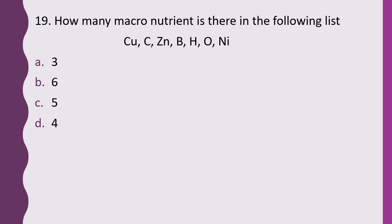Question 19. How many macronutrients are there in the following list: copper, carbon, zinc, boron, hydrogen, oxygen, nickel? Options: 3, 6, or 4. The correct answer is option A, that is 3. The macronutrients from this list are carbon, hydrogen, and oxygen.